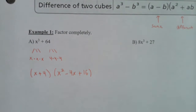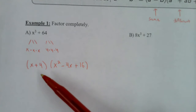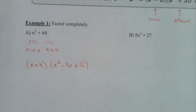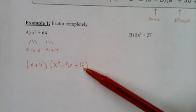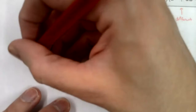Now you have to be careful — look at the expression you just wrote and see if you can factor any more. Can you find two numbers that multiply to 16 and add to negative 4? No, you cannot. So this is the final answer.